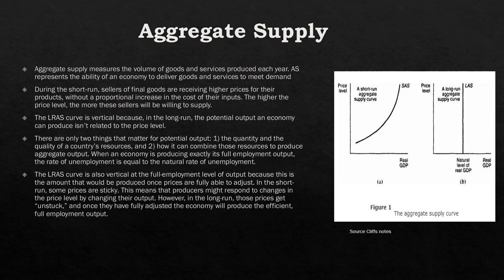However, in the long run things balance out, and you have a vertical long-run aggregate supply curve. In the short run there's a lag between the potential output of an economy and the price level, but that levels out in the long run.